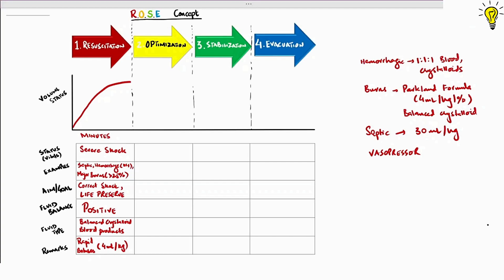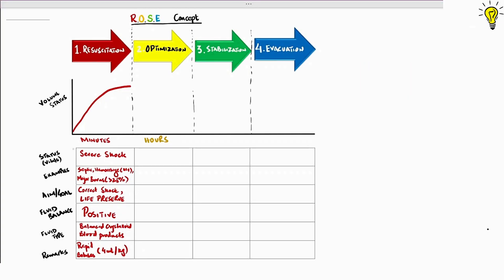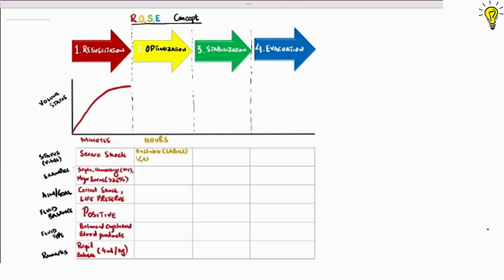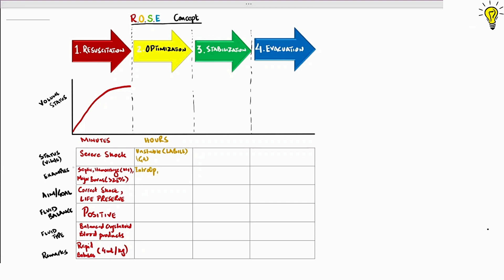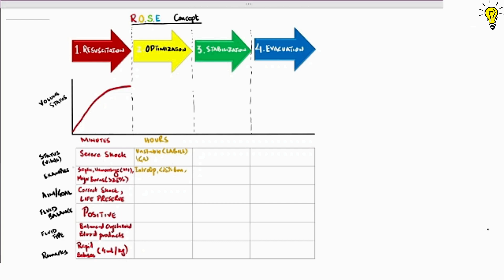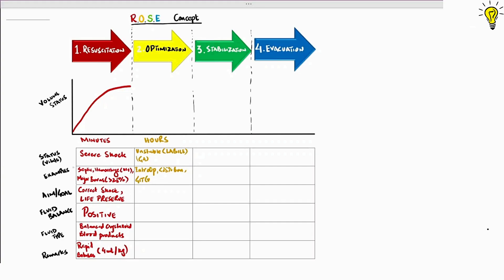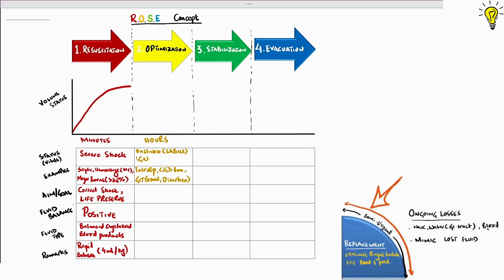Surviving sepsis bundle dictates liberal fluid therapy in septic shock at even 30 ml per kg resuscitation fluid. Modern studies are tilting towards more goal-directed fluid responsiveness. So 3 to 4 ml per kg IV bolus over 10 to 15 minutes repeated if necessary along with vasopressor support. The next stage is optimization.